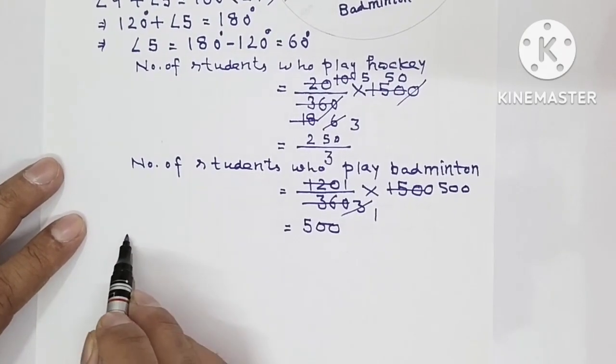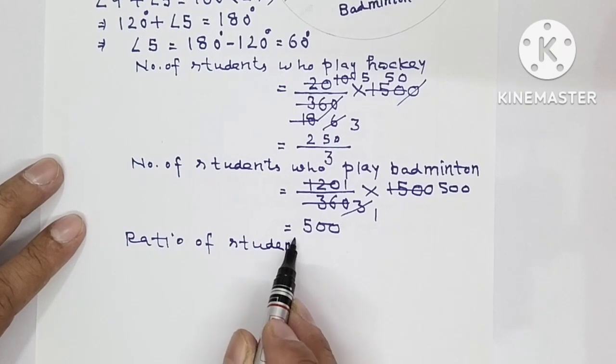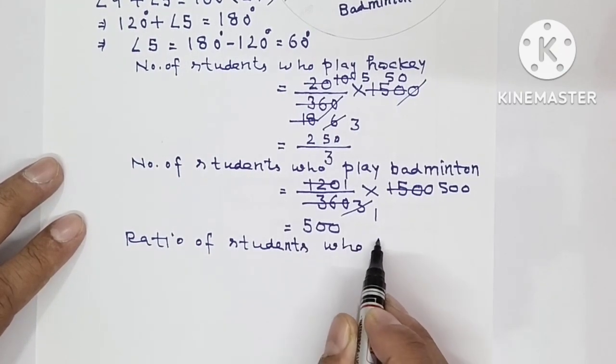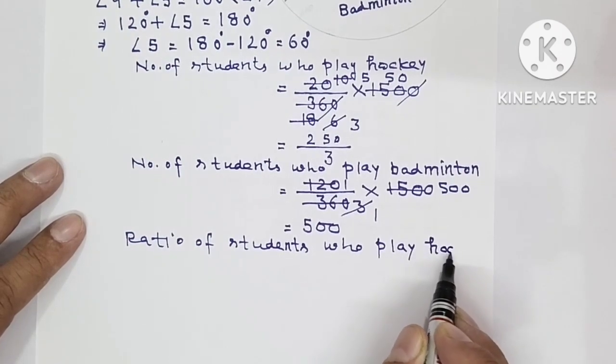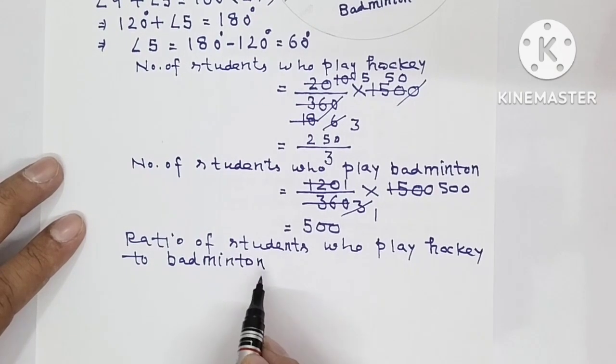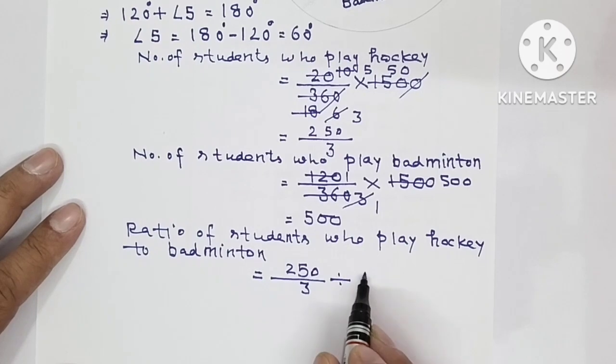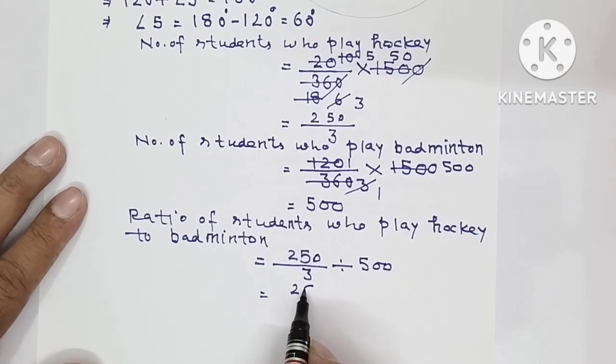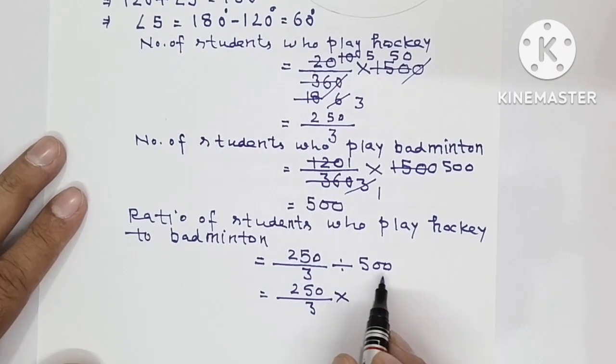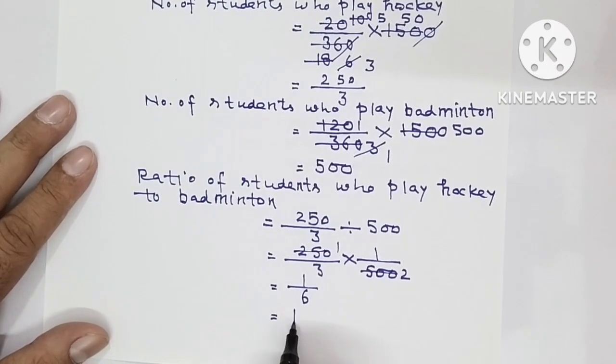Now you have to find the ratio. So we will write ratio of students who play hockey to badminton. How many were hockey players? 250 upon 3. Now you have to divide this by 500. So this becomes 250 upon 3, divide becomes multiply, 1 upon 500. 250 one zero, 250 two zero. This becomes one over six. So ratio is 1 ratio 6.